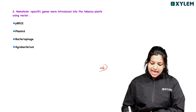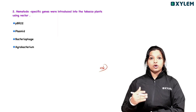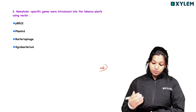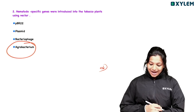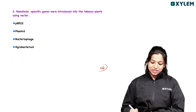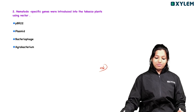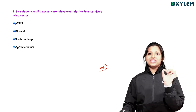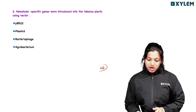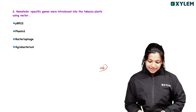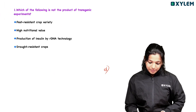Question two: Nematode-specific genes were introduced into tobacco plants using which vector? The answer is Agrobacterium. Nematode-specific genes were introduced into tobacco plants using the vector Agrobacterium.